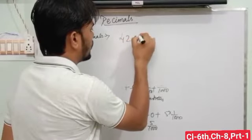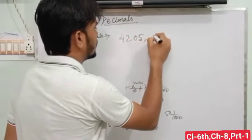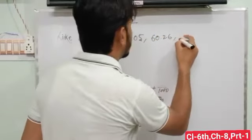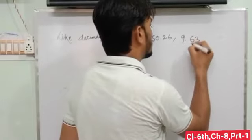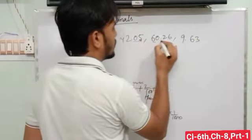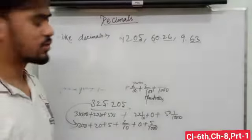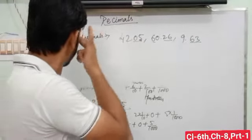Like decimals: 2.05, 60.26, 9.63. They all have two digits after the decimal, so these are called like decimals.